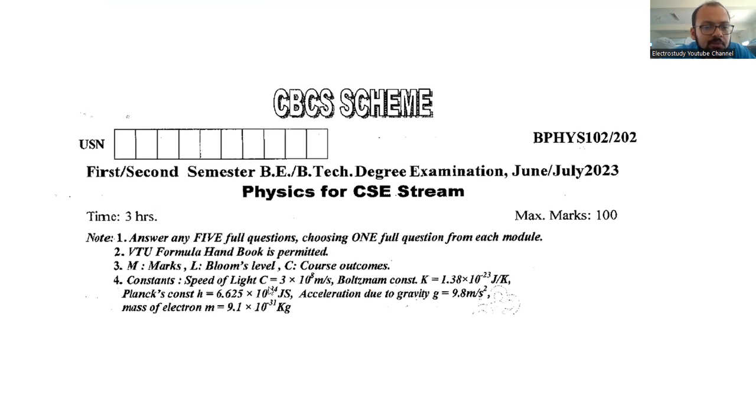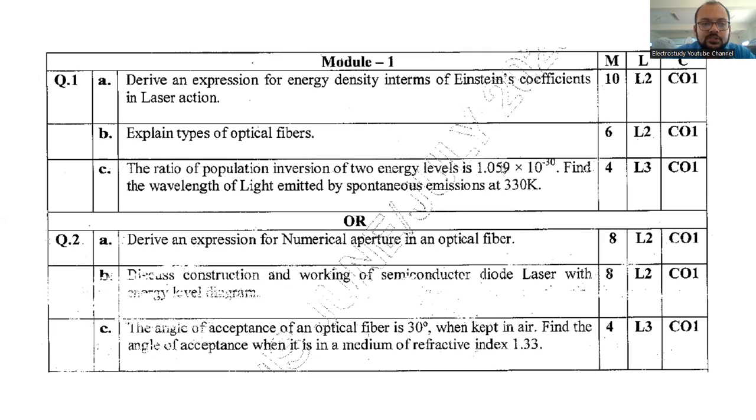Remember that some units like velocity of light, Boltzmann constant, Planck constant, acceleration due to gravity, and mass of electron are given. Apart from that, one user manual will also be distributed during the examination. That is for 2022 scheme. This is applicable for first year computer science branch students.